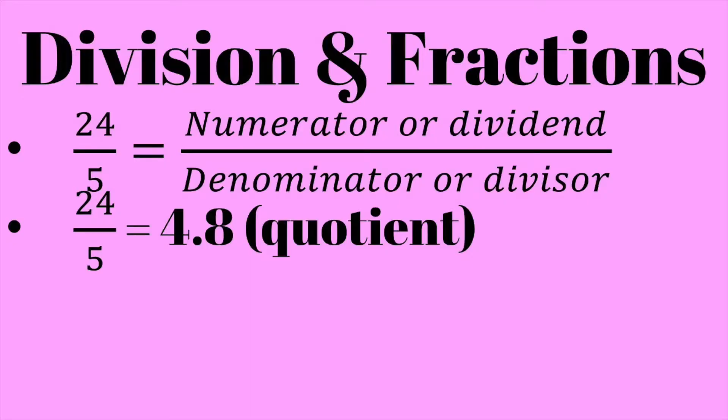You also have division and fractions, which are essentially the same thing. With these, you usually have a number on top of the line and a number on the bottom. The number on top is called the numerator or the dividend. The number on the bottom is usually called the denominator or the divisor. The end result that you have is called the quotient.